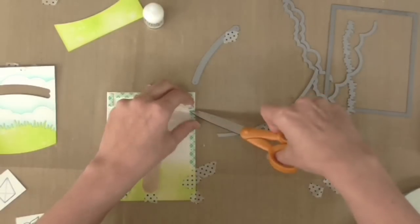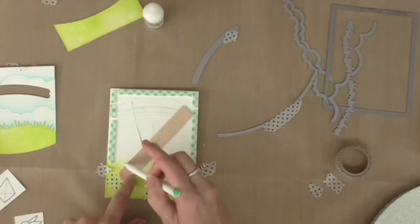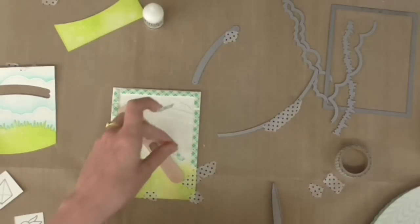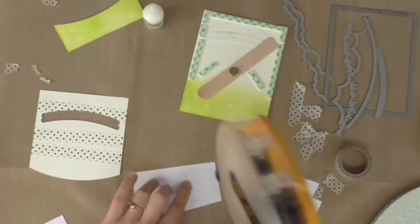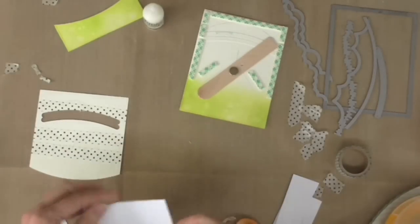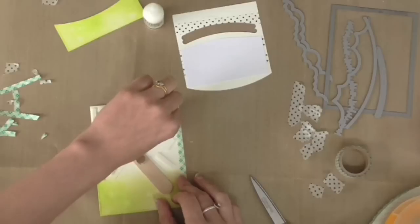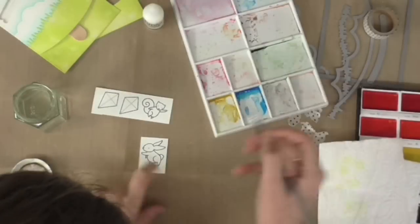I want to make sure that the foam tape doesn't interfere with the mechanism at all so I traced along where the stick moves and made sure to stick my foam tape in areas that wasn't going to interfere with it. Now all my little jigsaw pieces are just held together with washi tape so I decided to have a little panel of cardstock on the back just to make it a little bit more robust before sticking it onto the top of the foam tape.